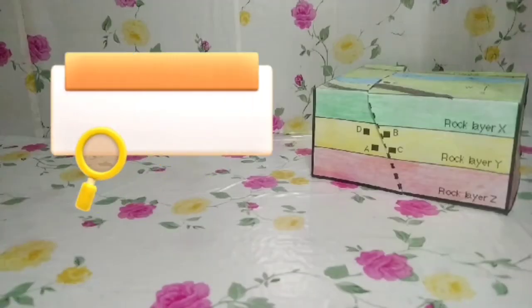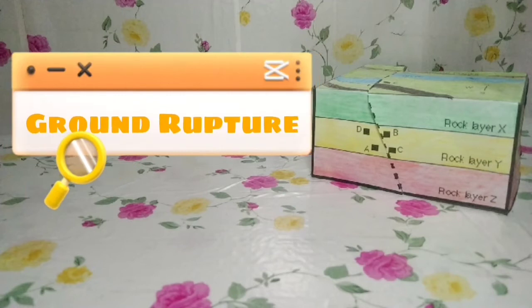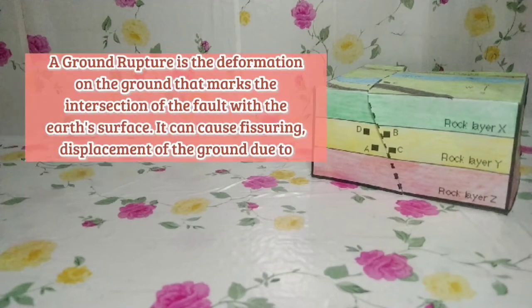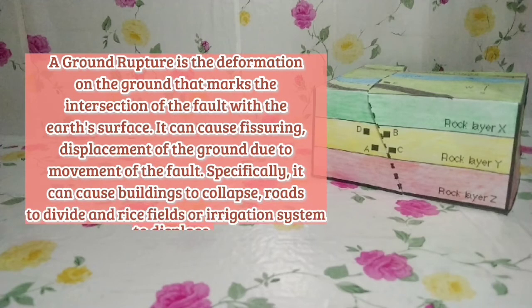Hello! In this video, we're going to talk about ground rupture. A ground rupture is the deformation on the ground that marks the intersection of the fault with the Earth's surface. It can cause fissuring and displacement of the ground due to movement of the fault.